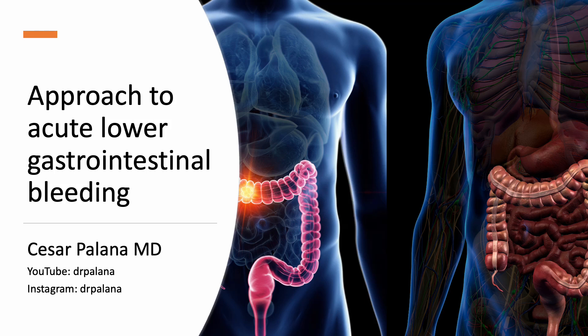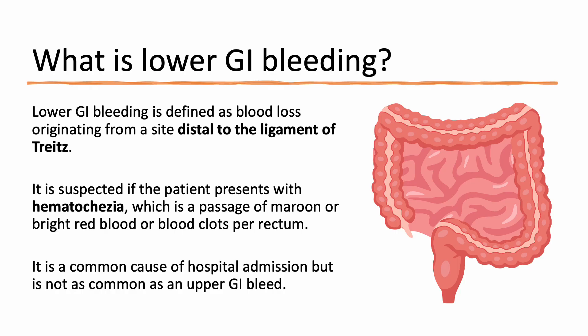Lower gastrointestinal bleeding is a common reason for hospital admissions and contributes significantly to hospital morbidity and mortality. Lower GI bleed differs from upper GI bleed in terms of epidemiology, management, and prognosis. But first, let's define a lower GI bleeding.